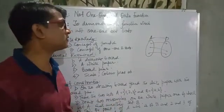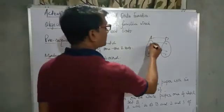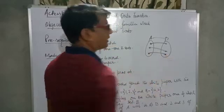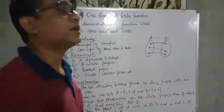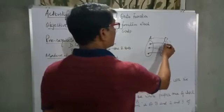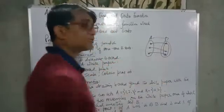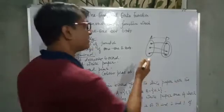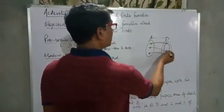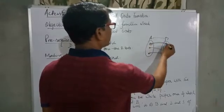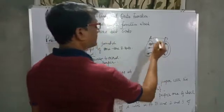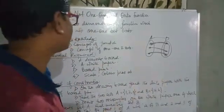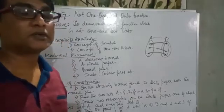The one-one concept: each and every element of A has a unique image in B, then it is one-one. Onto means each and every element of B has a pre-image in A. If each and every element of B has a pre-image in A, then the function is onto. This is the prerequisite knowledge we should keep in mind.